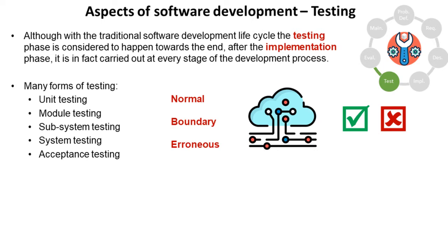Unit testing, modular testing, subsystem testing, system testing, and finally acceptance testing. The earlier phases of testing will make sure the system and its various components behave correctly with normal, boundary, and erroneous data.